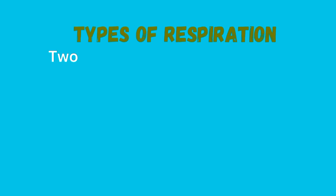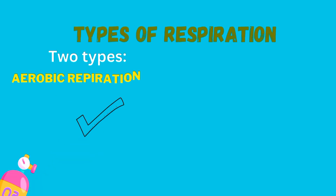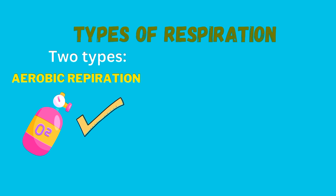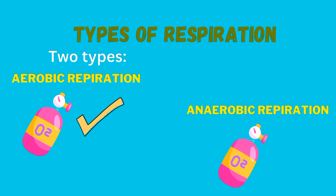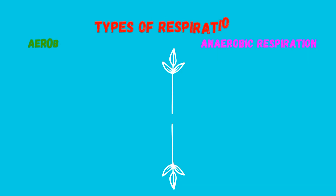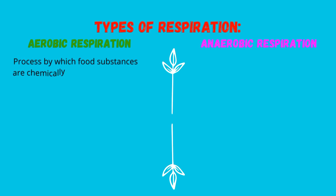There are two types of respiration: aerobic respiration and anaerobic respiration. Let's start with the first one — aerobic respiration. This is a process whereby food substances are chemically broken down in order to release energy, and this has to be done in the presence of oxygen.